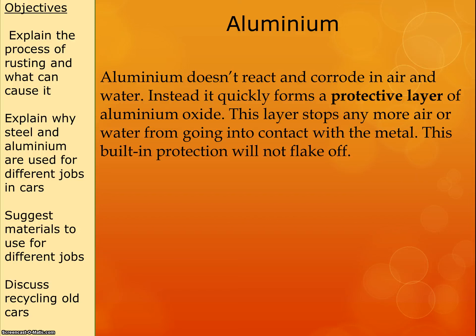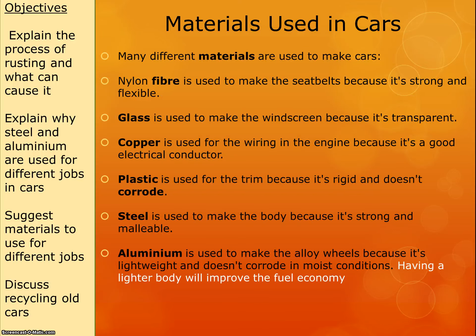With aluminium that just doesn't happen — the aluminium stays perfectly intact with a nice protective layer of aluminium oxide around the outside. For this unit we need to be able to talk about different materials and why they're used for cars. Just being able to give some examples would do very nicely.